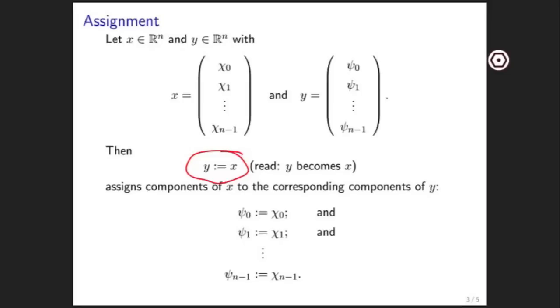When you assign vector x to y, what you have to do is assign the component indexed with 0 from x to the corresponding component of y. In other words, you want to set psi sub 0 equal to chi sub 0 and so forth.